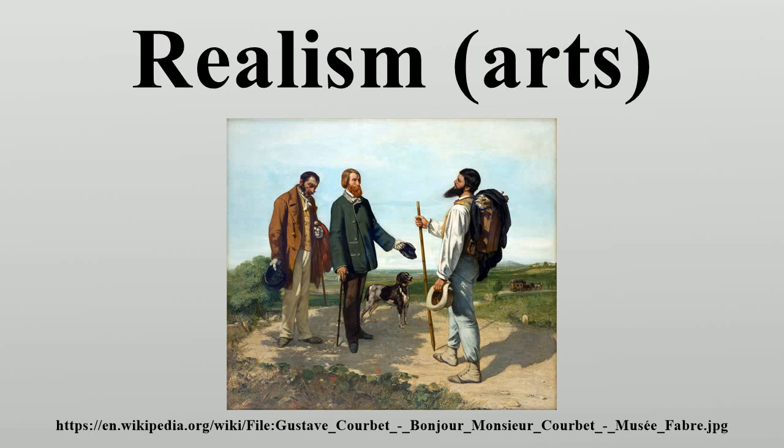Further illustrated works include: a Late Gothic Pietà from Lubiąż in Lower Silesia, Poland, now in the National Museum in Warsaw; Jean-François Raffaëlli, Outskirts of Paris, 1880s; William Bliss Baker, American Naturalist Painter, Fallen Monarchs, 1886; Pekka Halonen, Finnish Naturalist, Pioneers in Karelia, 1900.